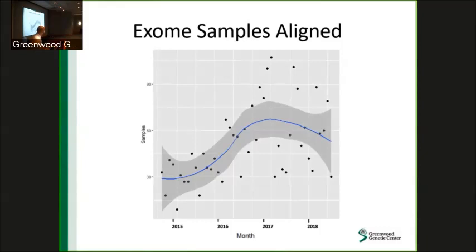That's mostly what our pipeline entails. Here's a graph of what we've done since the end of 2014. Each one of these dots represents how many samples we get per month over the last three and a half years, and I put a smoothing curve on here as well. It's pretty variable how many samples we get per month. It starts to decline a little bit because now we're starting to get more requests for panels and different types of surface exomes. The average across this entire distribution is roughly 50.6 samples per month. We use that number to extrapolate how many exomes we'll be doing five to ten years from now.